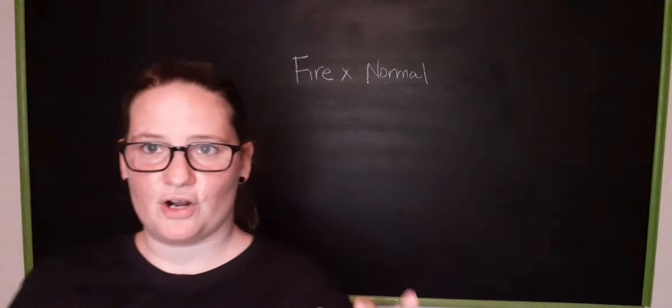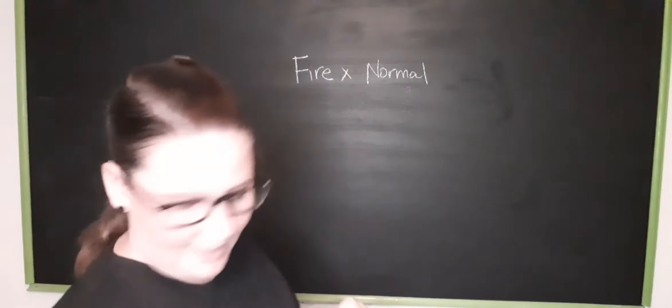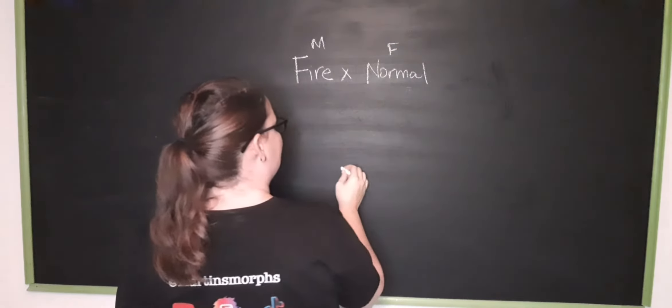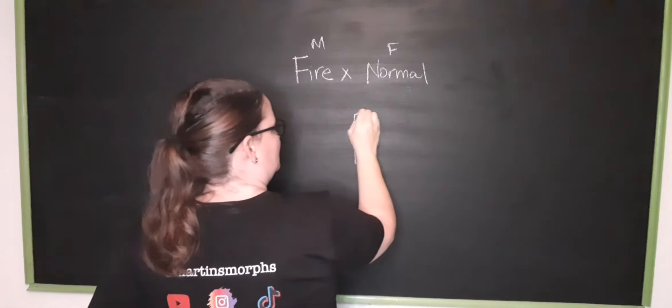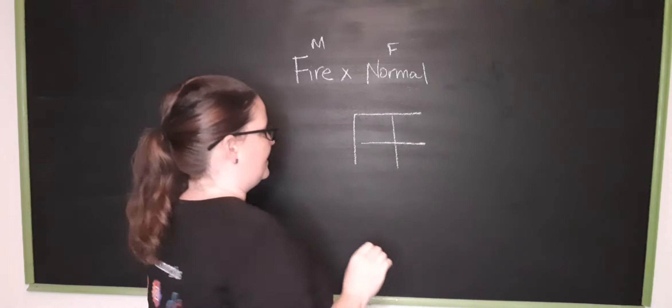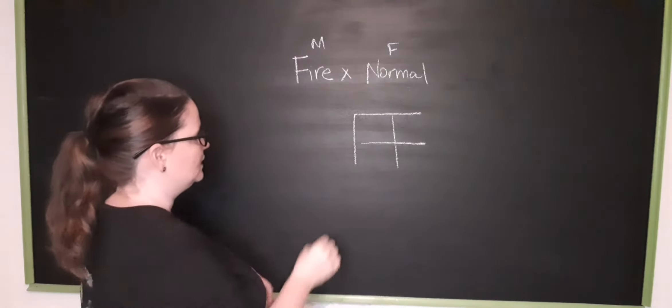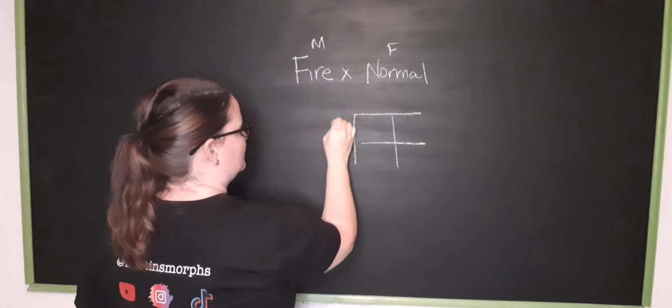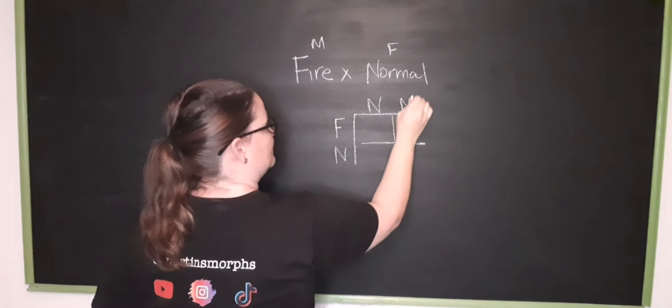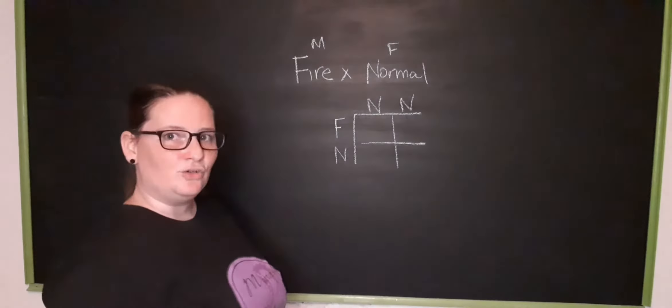Now because there are two copies of the gene we're going to do a Punnett square and let's make this our male and this our female. Now here's the Punnett square we're going to do. They can get more difficult than this but let's do and then we're going to have the female. So how you calculate this is you go,